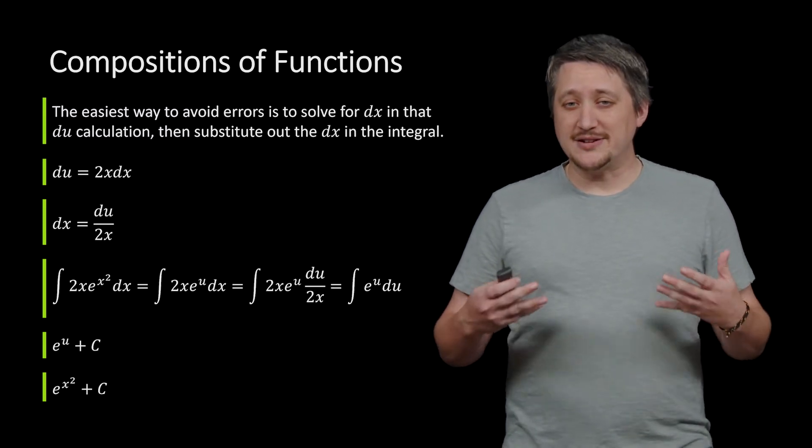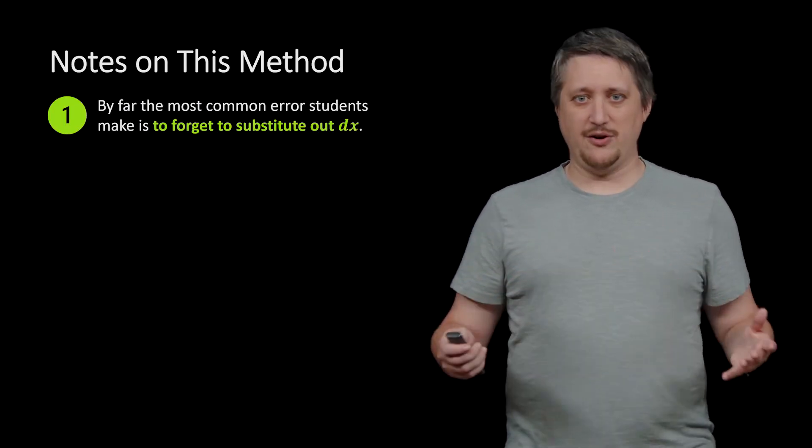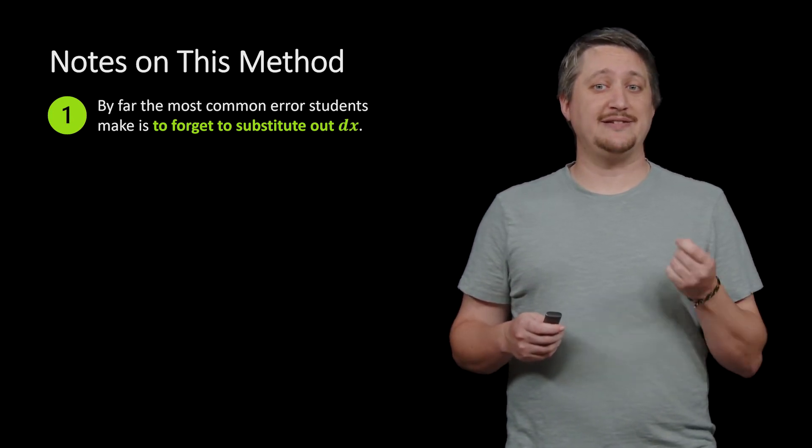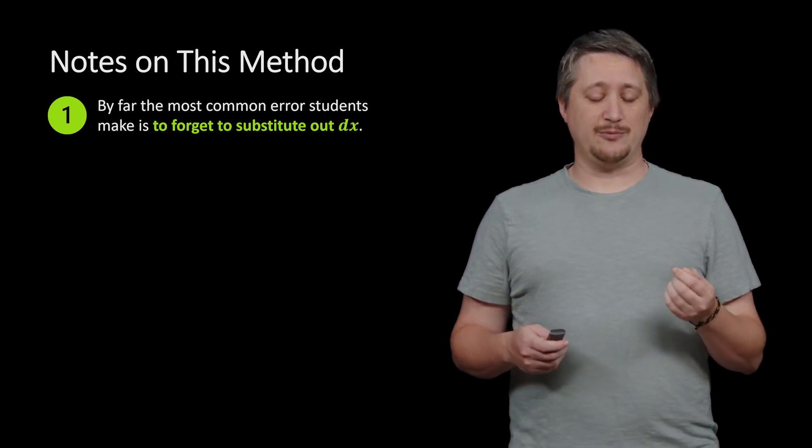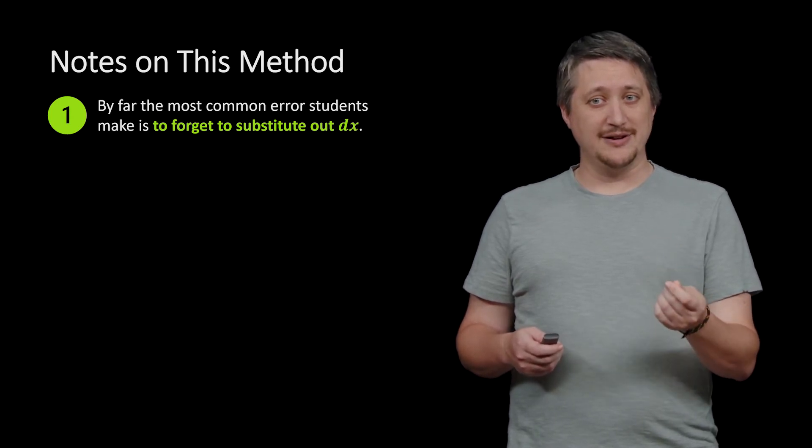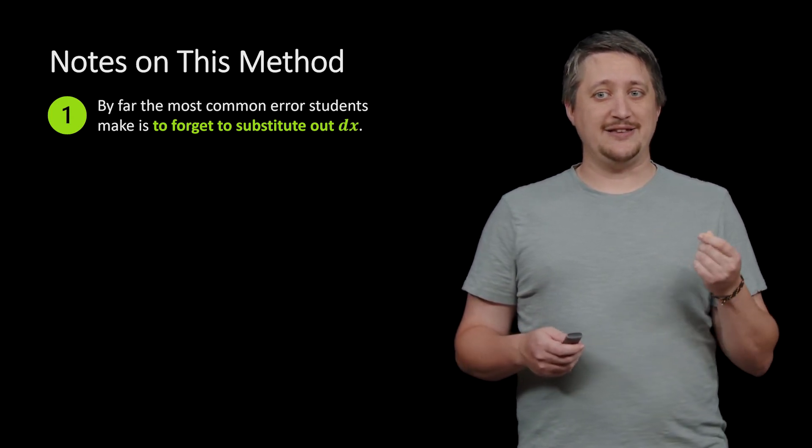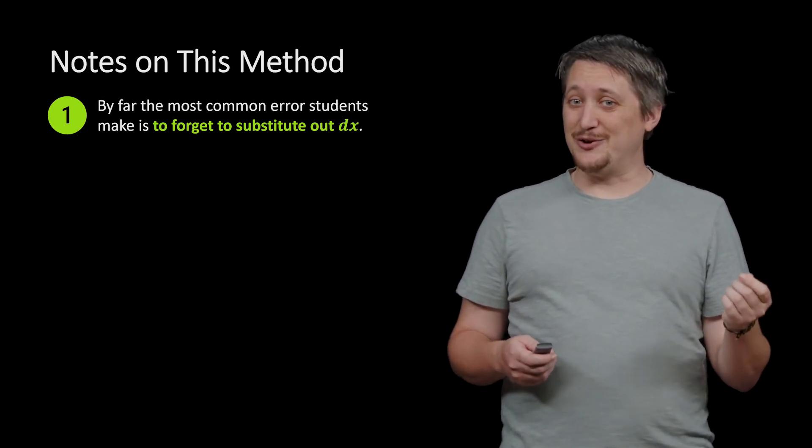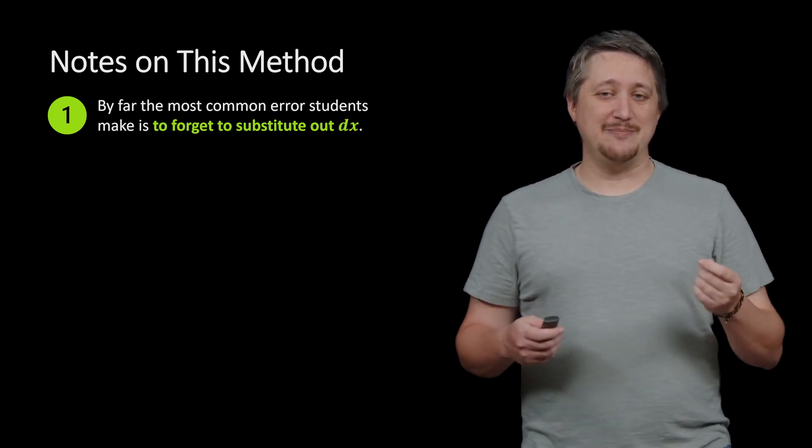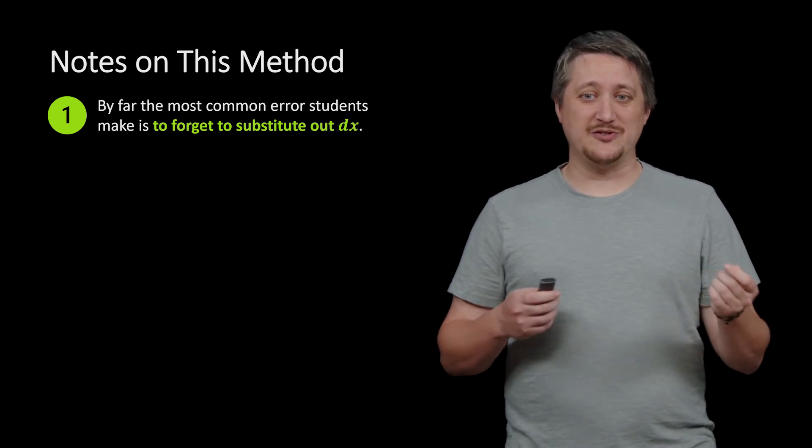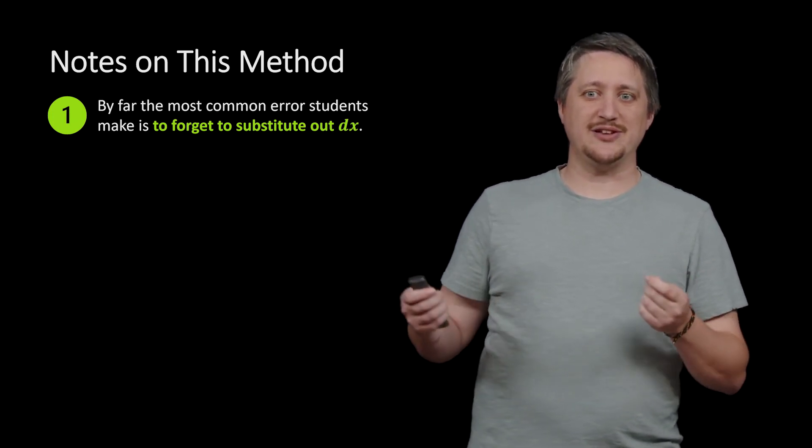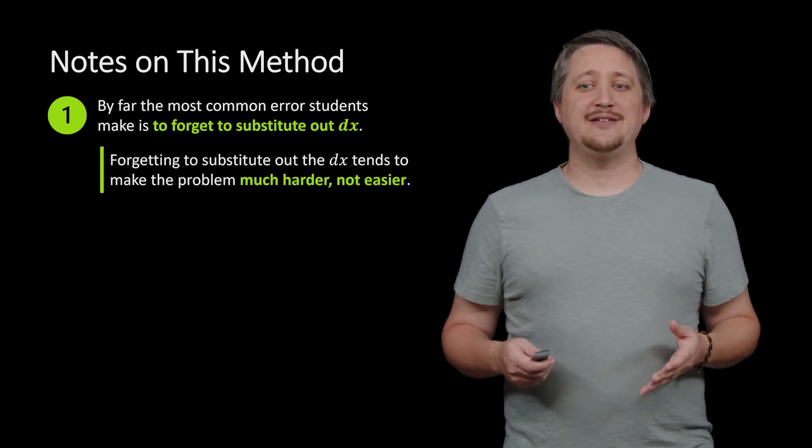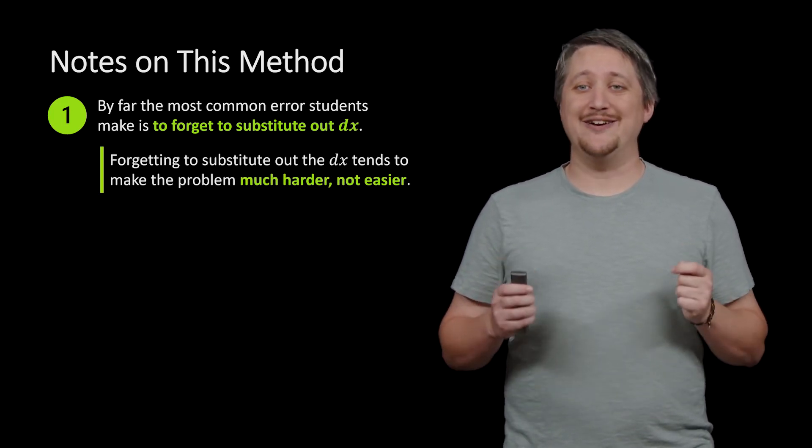All right, so this is the basic outline. Now, by far, the most common error that students make is to forget to sub out that dx. They get really focused on the u part and try to sub in the u and they forget the dx, either because they forgot to write the dx, which is all kinds of bad, or they kind of messed up and didn't sub out the dx correctly. They just wrote du instead of dx by accident.